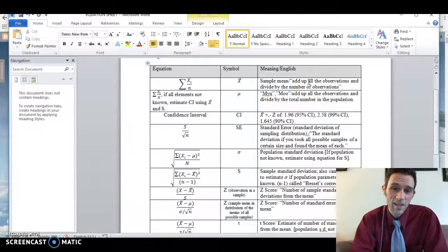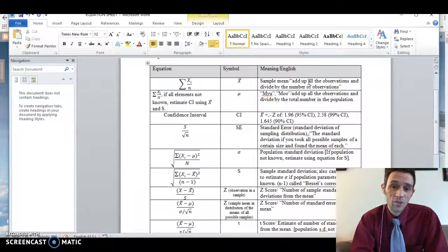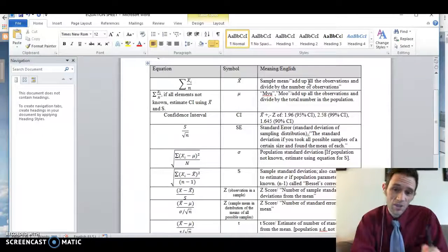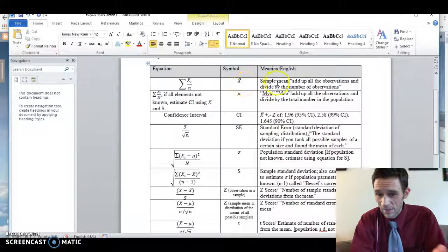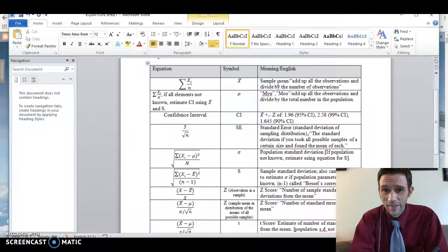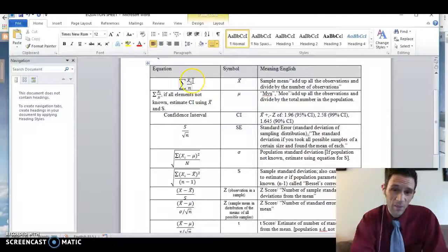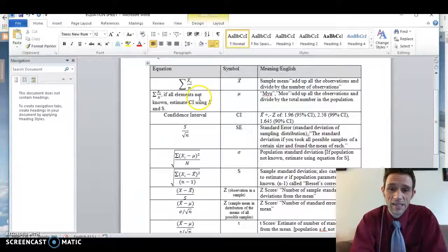You know this is X bar. You know this is the sample mean. And you know that in English, it means to add up all the observations. Xi means all the observations, all the x's. Divide by n, the number of observations. So you've got the mean down pat. You know what the equation looks like. You know what the symbol for it is. And you can talk about it in English. And you can do it. I know this because I see that there's not a single one of you that has a problem with this anymore on any of the assignments or anywhere. So this is step one. You've got this down.